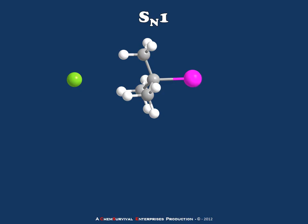Let's begin by considering the SN1 reaction. In the depiction on this slide, you'll notice the nucleophile in green — this is the entity which will be donating electrons to form the new bond. The leaving group is depicted in pink, and the electrophilic carbon is the carbon at the center of our t-butyl group, making this look like a t-butyl halide. The entire molecule which is going to be attacked is labeled as the substrate — this is how we refer to the molecule which will undergo nucleophilic attack. So the entire t-butyl halide would be the substrate for our nucleophilic substitution reaction.